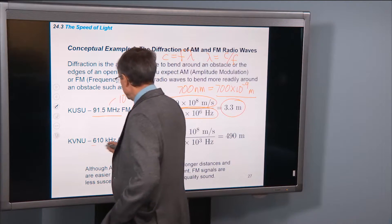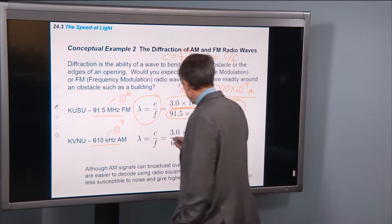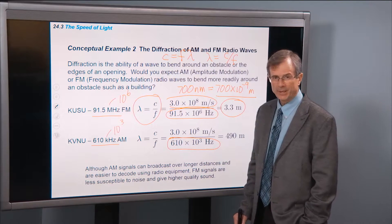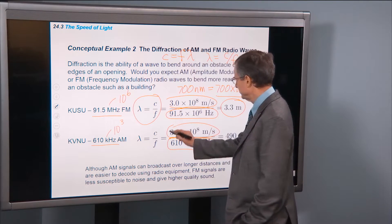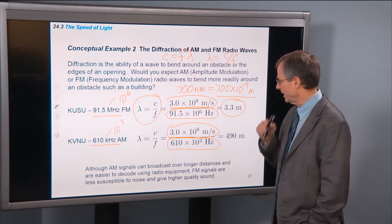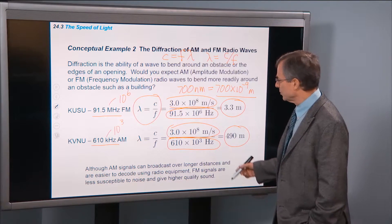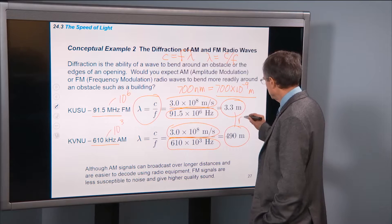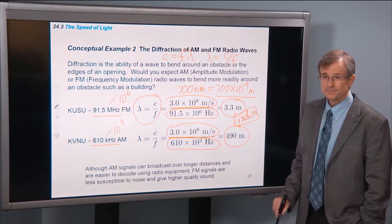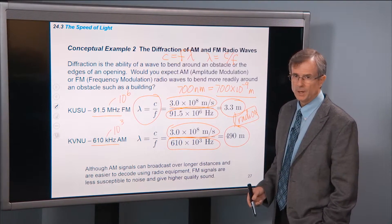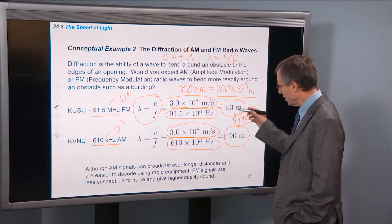What about AM? KVNU is 610 kilohertz. What's kilo? It's 10 to the 3. So there's that number expressed in terms of regular old hertz. 610 times 10 to the 3 hertz. Speed of light is the same for all forms of electromagnetic radiation. And you get a wavelength of about 490 meters. These are radio waves. Visible, much, much smaller. Ultraviolet, even smaller, etc. But these are pretty large.